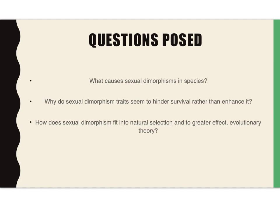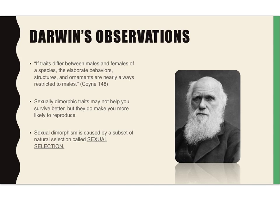In the previous section we talked about sexual dimorphism, but there are a few questions to pose: one, what causes sexual dimorphism in species? Two, why do sexually dimorphic traits seem to hinder survival rather than enhance it? And three, how does sexual dimorphism fit into natural selection and evolutionary theory? Darwin made a few observations — he noticed that males are usually the ones who exhibit the extra features, and that though the traits may not help survival, they do make you more likely to reproduce. He called this unique form of natural selection sexual selection.